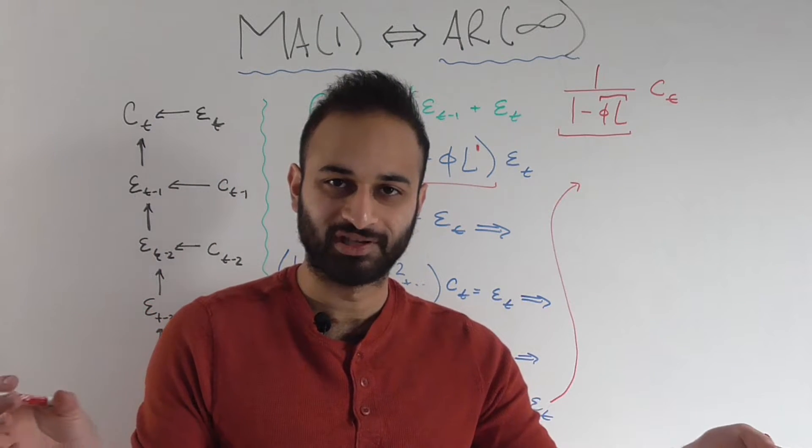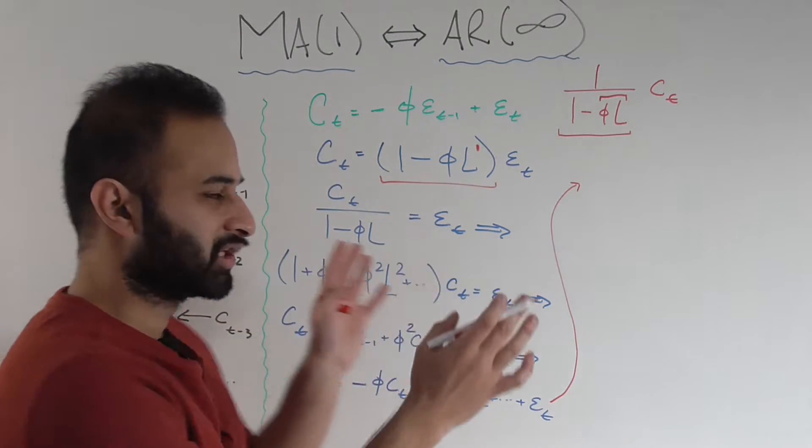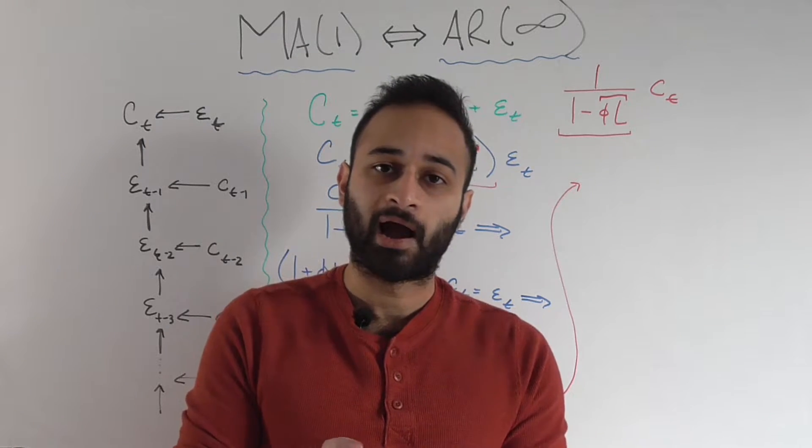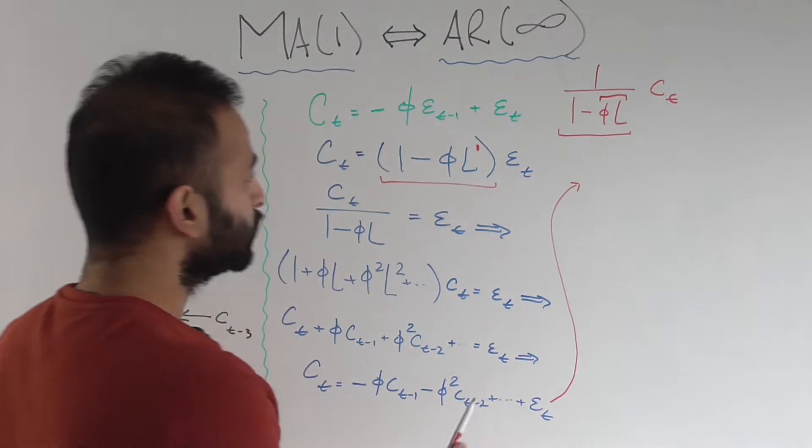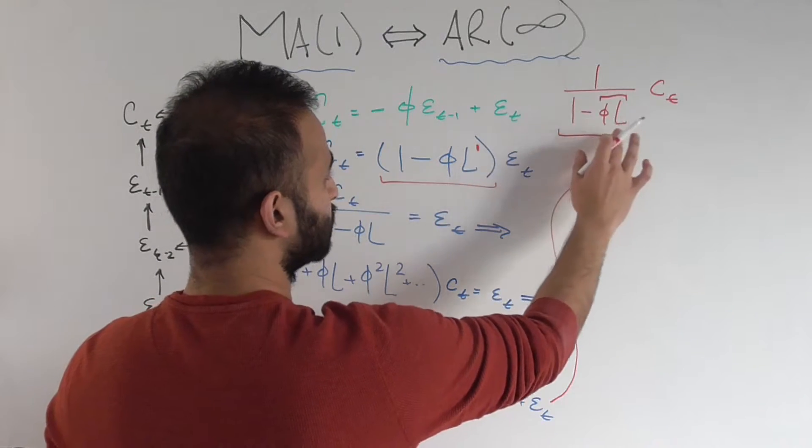Some of you are probably cringing a little bit because this L is an operator. It's not a number, so why am I allowed to do this? This is an operator, and this is all shorthand that we're using here. But if you were to do it the long way, you would find that this is indeed how this works out.